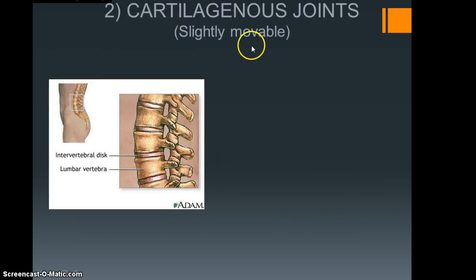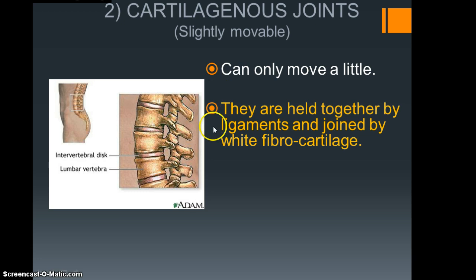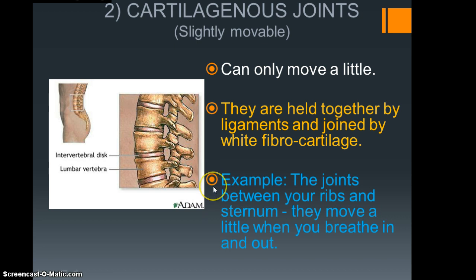For the cartilaginous joint, it's slightly movable, so obviously more than the fixed, and an example would be in the vertebral column. You can only move a little bit. They're held together by ligaments and joined by white fibrocartilage. An example would be the vertebral column, or you could also say the ribs and the sternum.